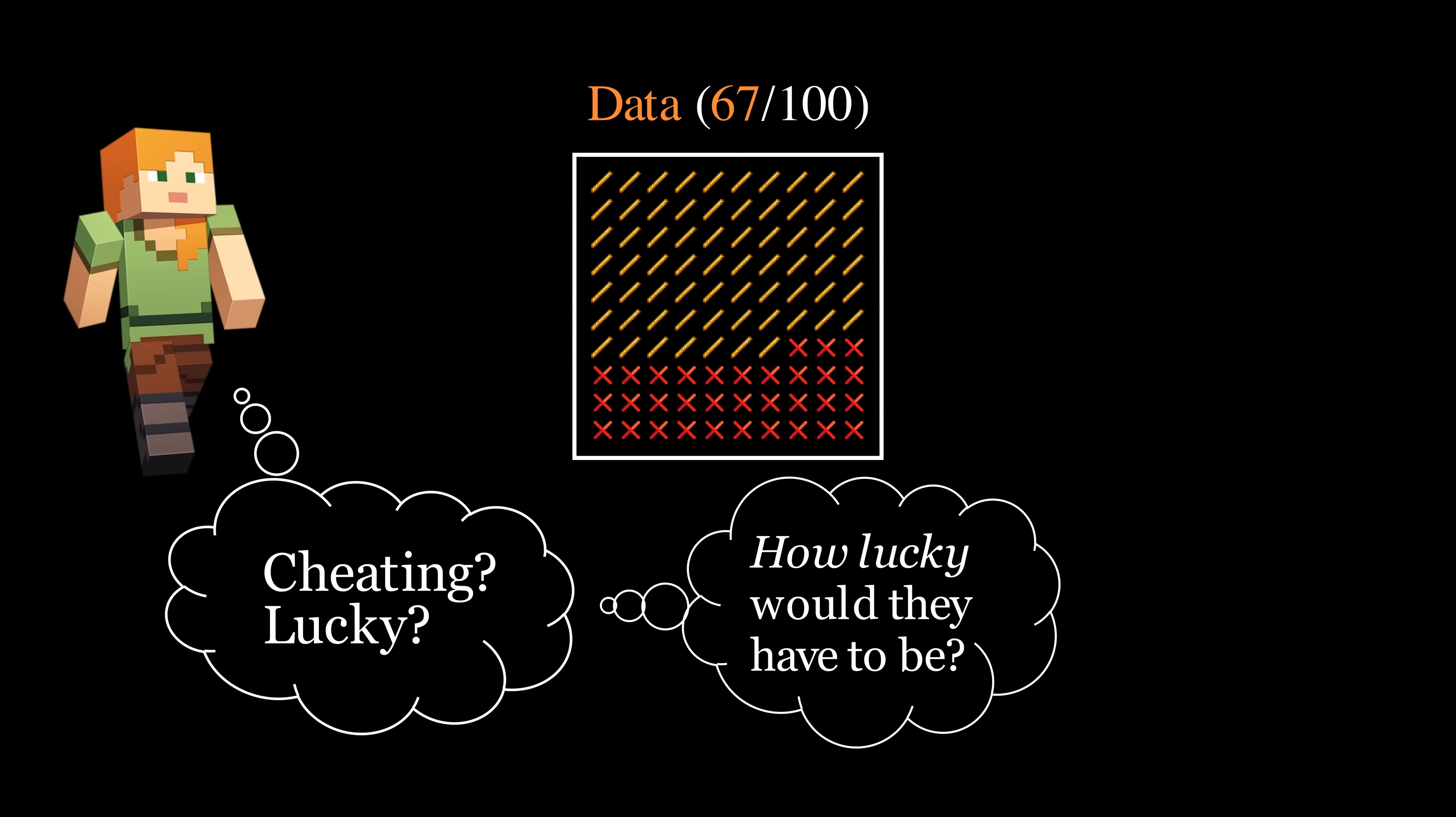In hypothesis testing, we answer this question by computing a p-value. A p-value essentially quantifies just how lucky our friend would have to be if they weren't cheating.